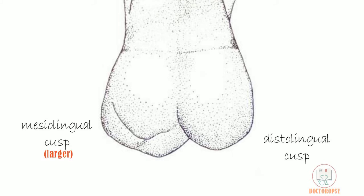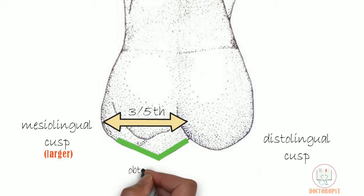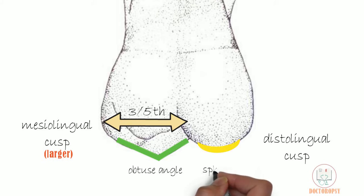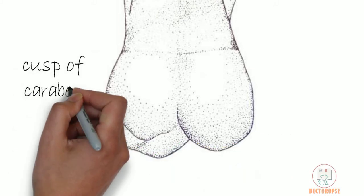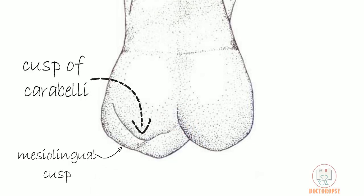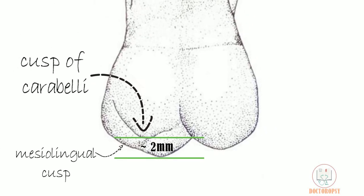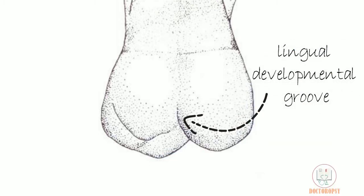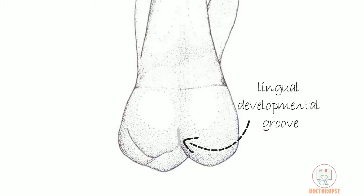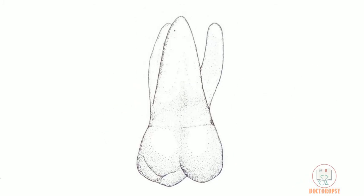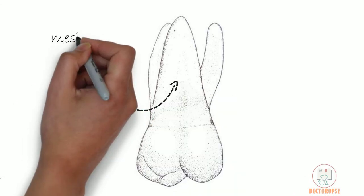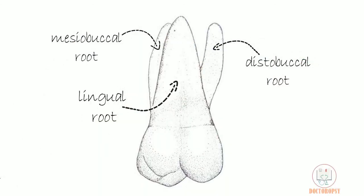The mesiolingual cusp is larger than the distolingual cusp, forming almost three-fifths of the mesiodistal diameter of the crown. Its cuspal slopes meet at an obtuse angle, whereas the distolingual cusp is more spherical. The cusp of Carabelli is seen attached to the lingual surface of the mesiolingual cusp, generally 2 mm cervical to the mesiolingual cusp tip. Like the buccal developmental groove, a lingual developmental groove is present between the two lingual cusps running cervically. All three roots are visible, with the larger lingual root in front and parts of the mesiobuccal and distobuccal roots on the sides.